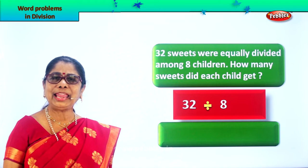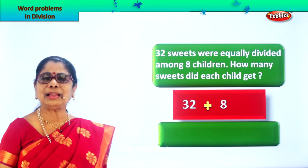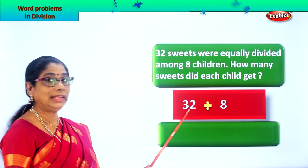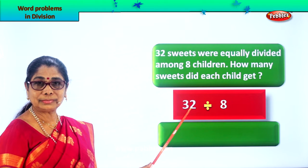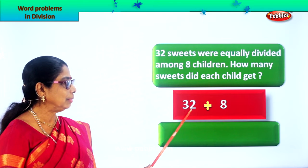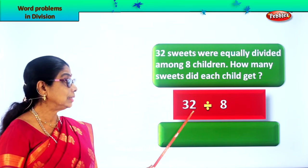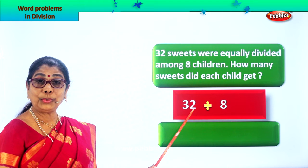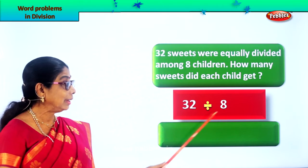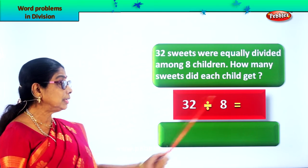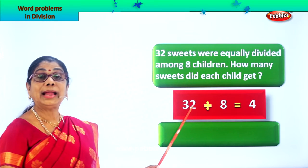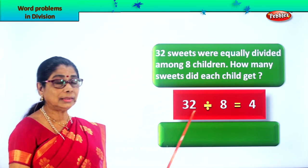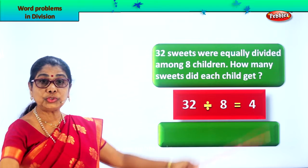Now you know your tables — 8 will go into 32 how many times? Say your tables orally: 8 ones are 8, 8 twos are 16, 8 threes are 24, and 8 fours are 32. So 4 times it will go into 32. Multiply and see: 8 fours are 32. That means each child will get 4 sweets.